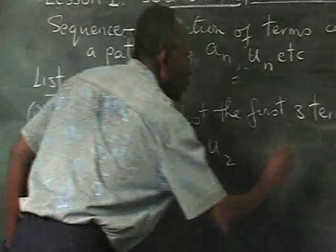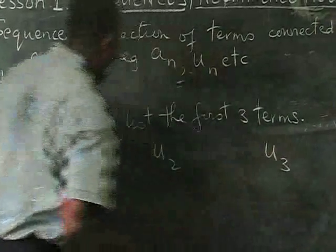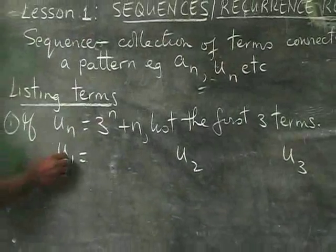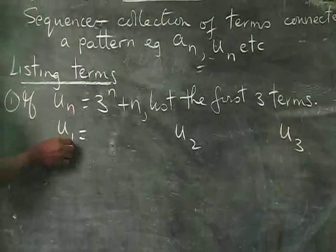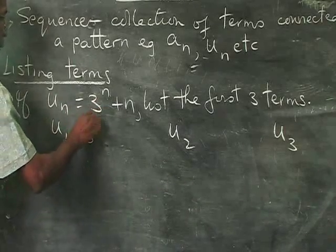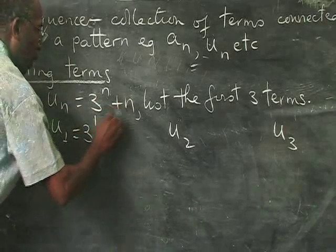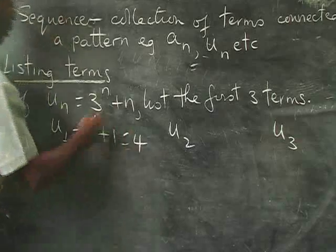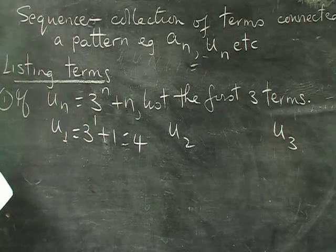Now for us to get U1, this is when N is 1. So N would be 1 here and here. So we get 3 to the power 1 plus 1. That would give us 4, because 3 to the power 1 is simply 3, plus 1, that's 4.